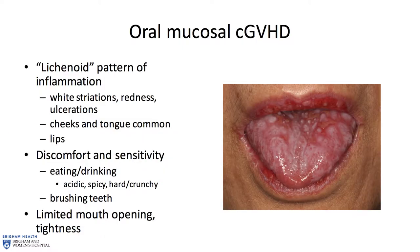With mucosal disease — when we call something lichenoid, that's the red and white pattern we call lichenoid inflammation because it refers back to the condition called lichen planus. It has typically these white-red changes and ulcerations. Sensitivity is the leading symptom. It's rare, though not impossible, for some patients to have some discomfort at rest, but usually not disabling discomfort. It's much more common that someone at rest would say their mouth doesn't hurt at all, but when they go to do something functionally, it becomes very uncomfortable.